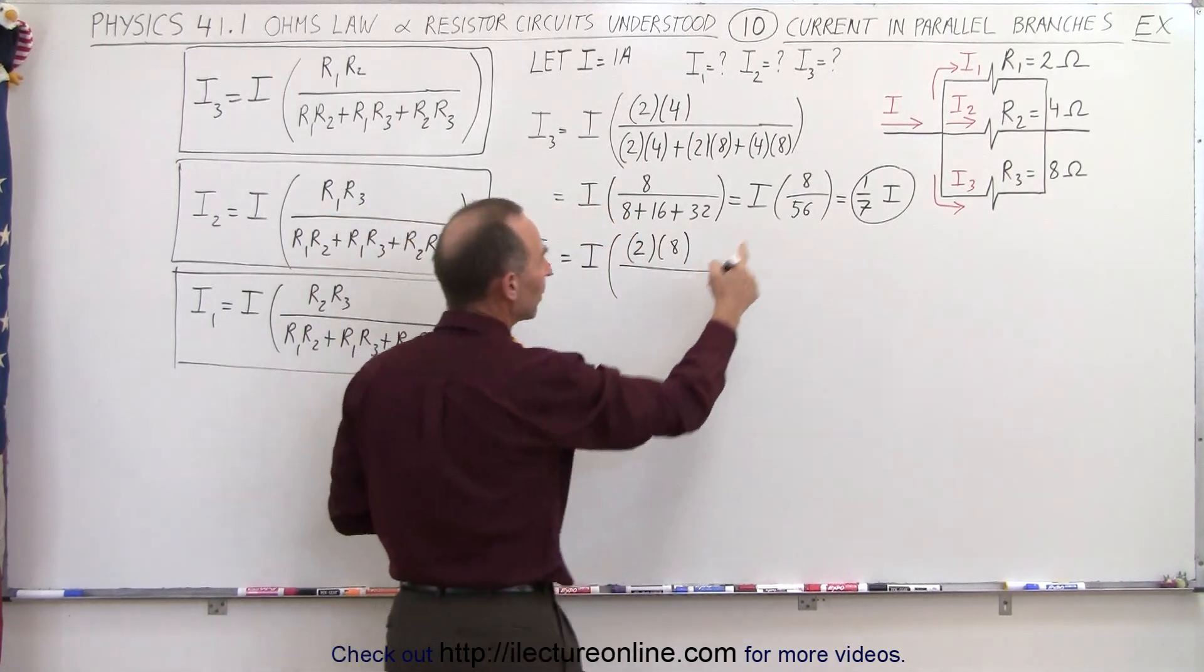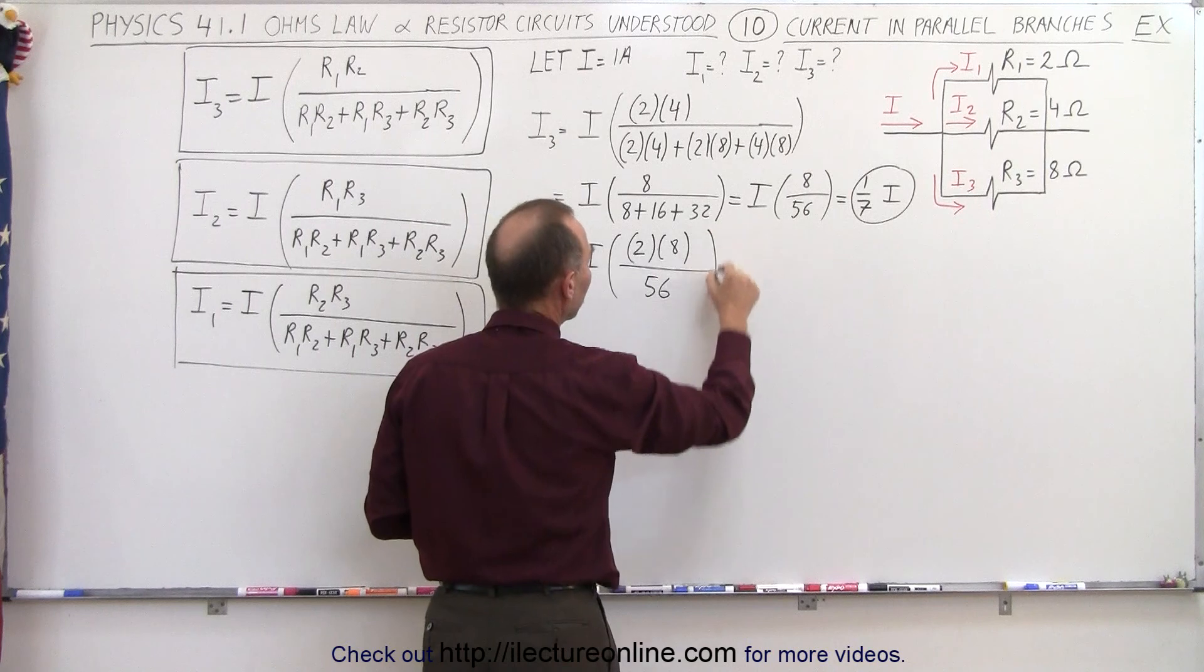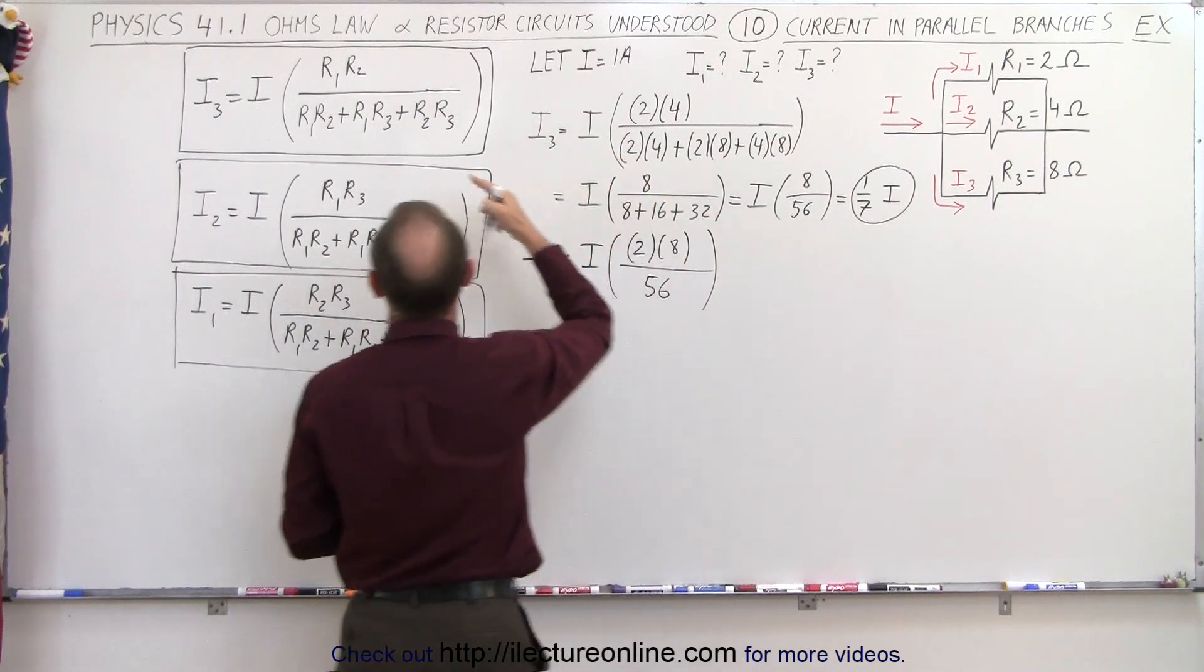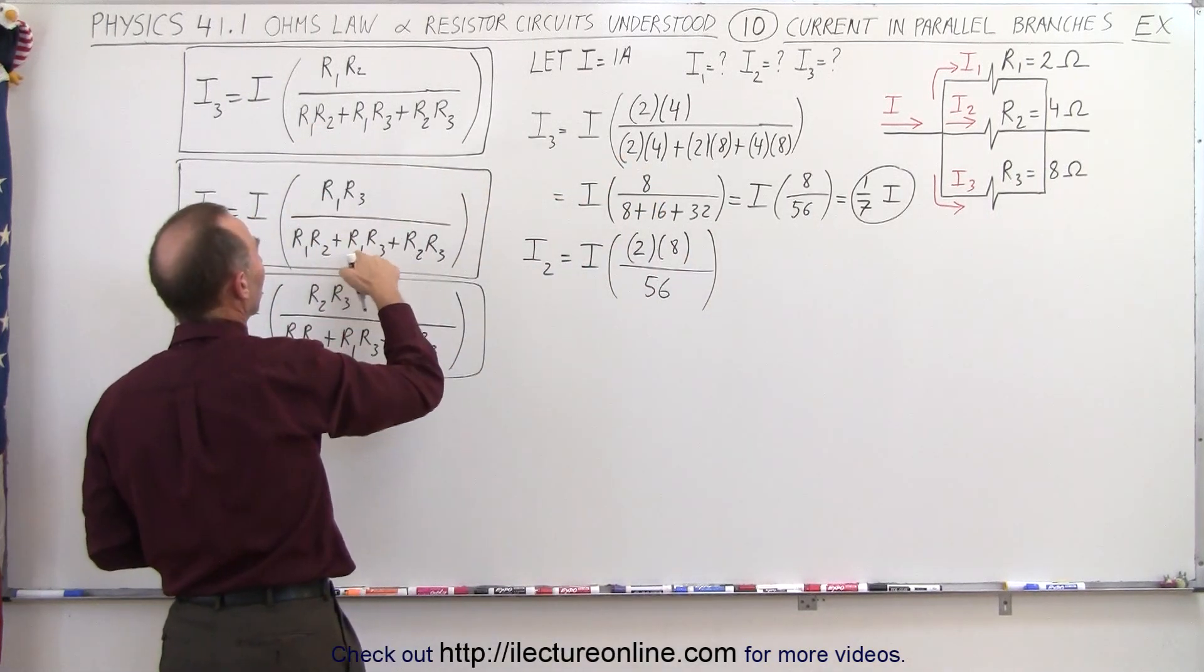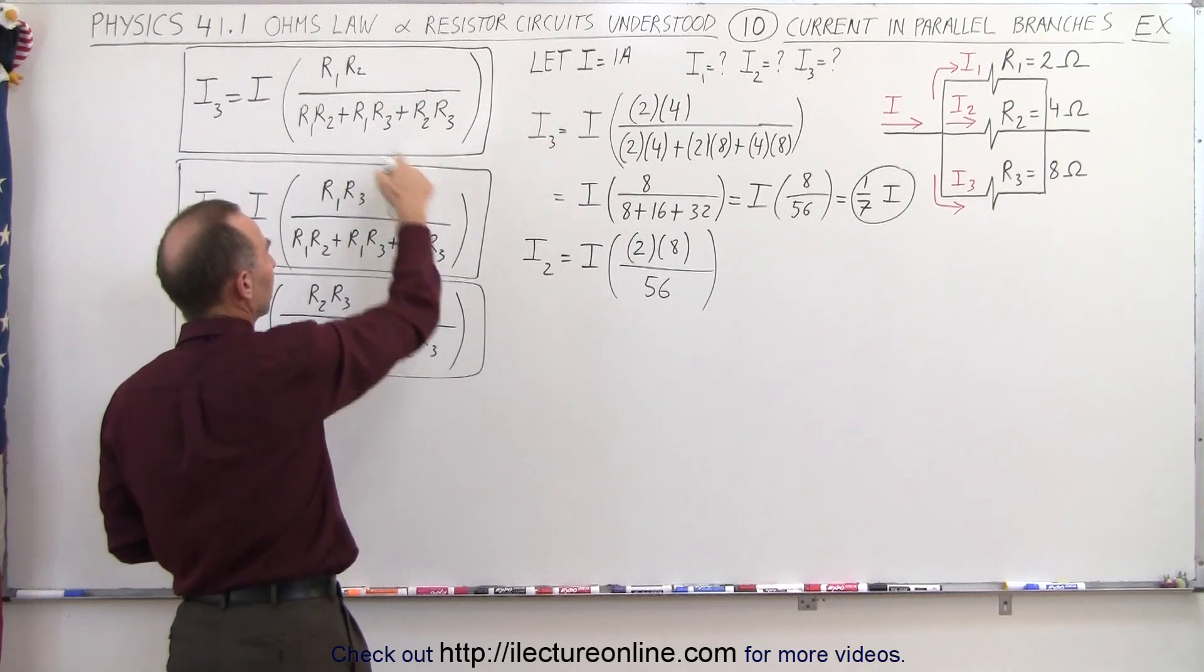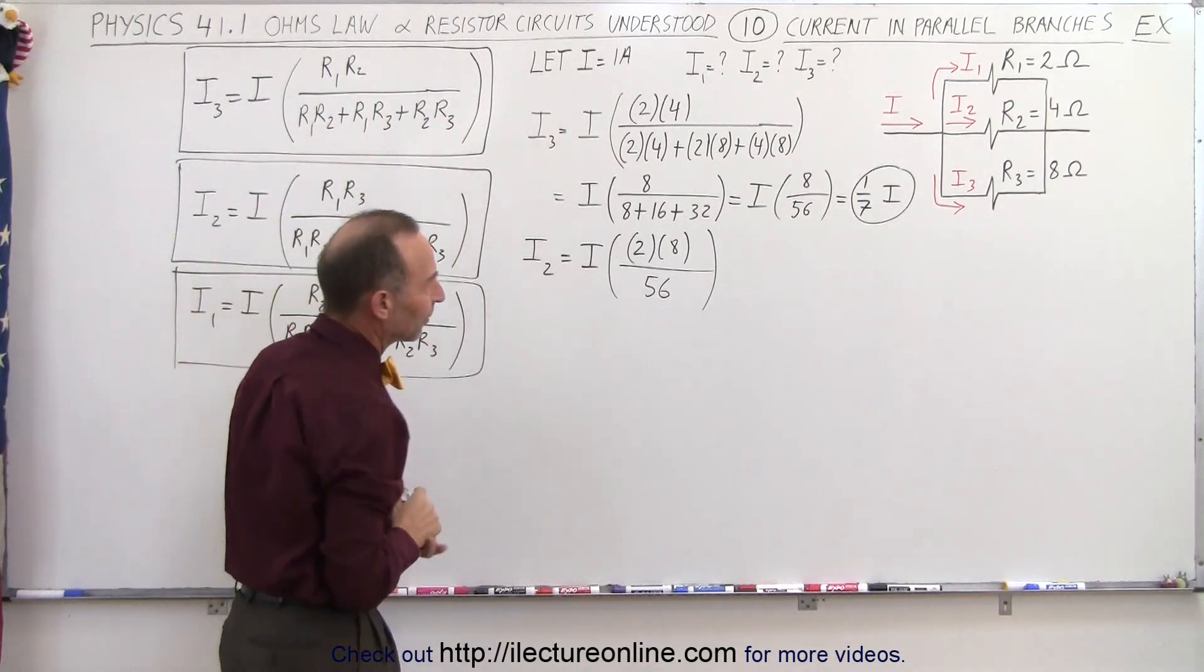And in the denominator, we'll get the exact same number, 56, because again, it'll be the same R1 times R2, R1 times R3, and R2 times R3, just like we have over there, so we get the same denominator.